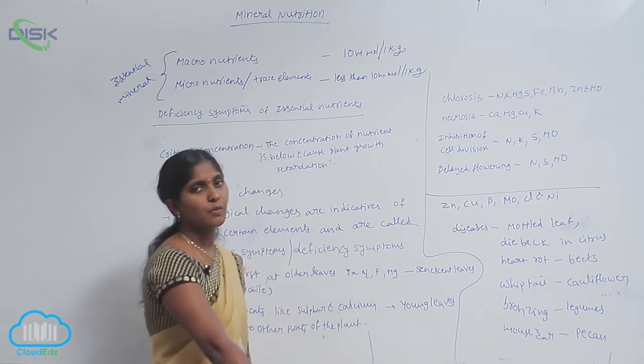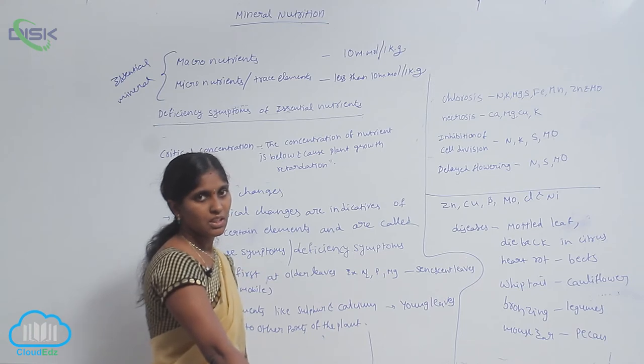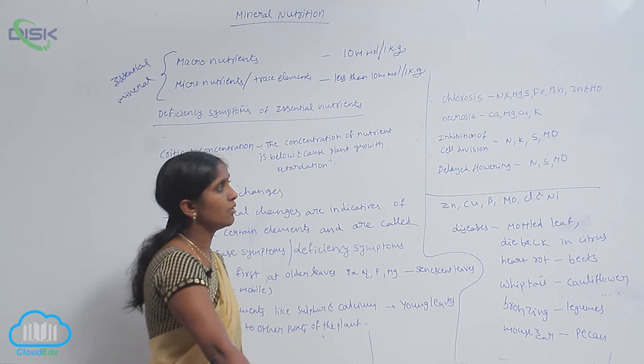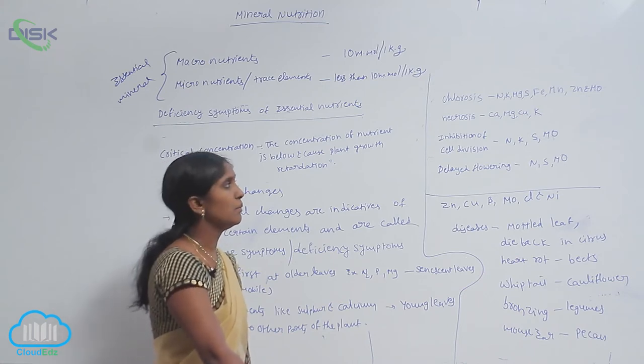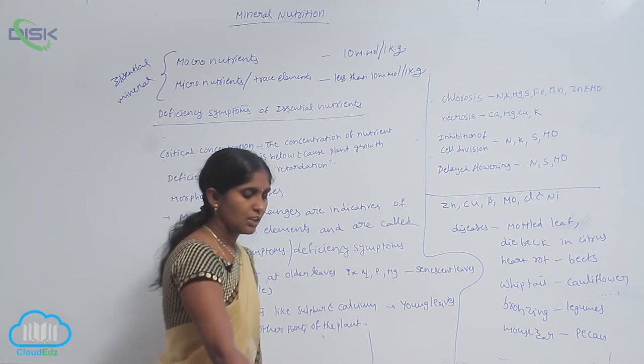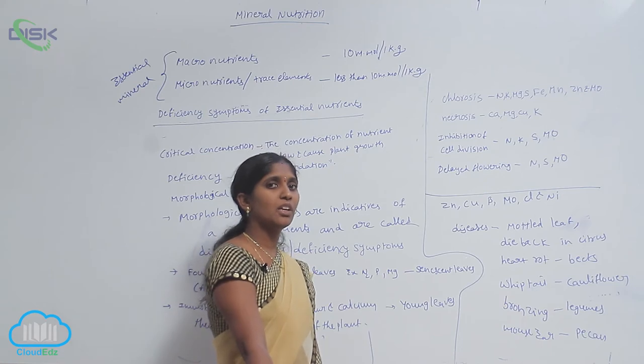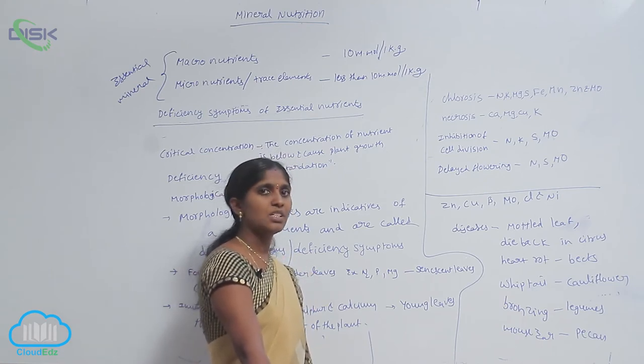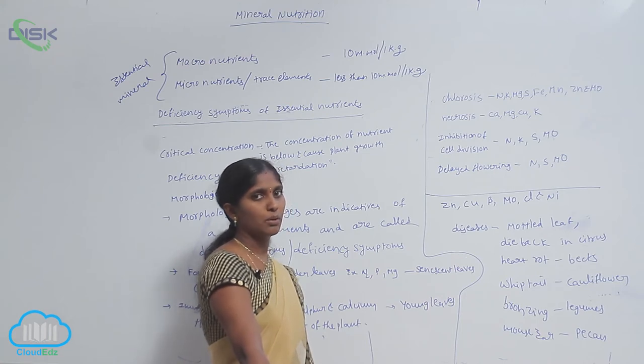Inhibition of cell division. The cell division is inhibited by deficiency of nitrogen, potassium, sulfur, and molybdenum. Sometimes the flowering and fruiting are delayed due to the deficiency of nitrogen, sulfur, and molybdenum.